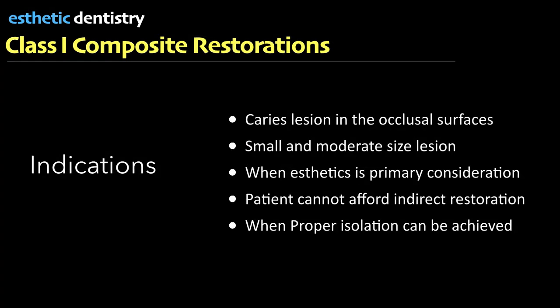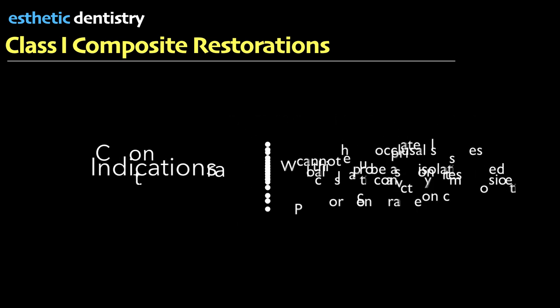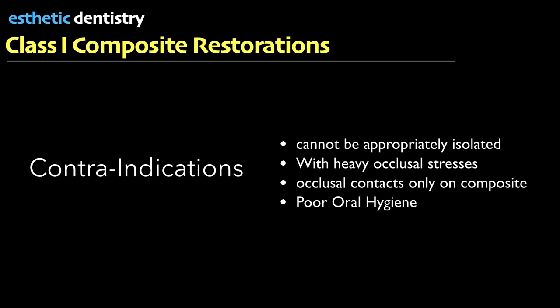Talking about the indications of Class 1 composite restoration: absolute indications include small and moderate restorations preferably with enamel margins, most premolar or molar restorations particularly when aesthetics is considered, restorations that do not provide or have occlusal contacts, restorations that can be appropriately isolated during the procedure, restorations serving as foundations for crowns or core buildup, large restorations to strengthen weakened tooth structure, and when there is economic concern with the patient.